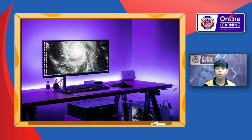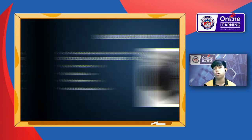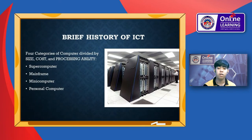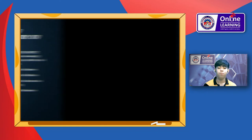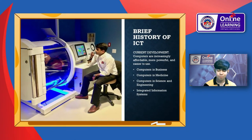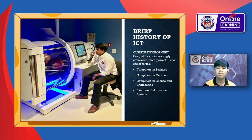Because of dramatic improvements in computer components and manufacturing, personal computers today do more than the largest computers of the mid-1960s at about a thousandth of the cost. Computers today are divided into four categories by size, cost, and processing ability: supercomputer, mainframe, minicomputer, and microcomputer — more commonly known as a personal computer. Personal computer categories include desktop, network, laptop, and handheld. Every day people use computers in new ways; they are increasingly affordable and continue to be more powerful as information processing tools.